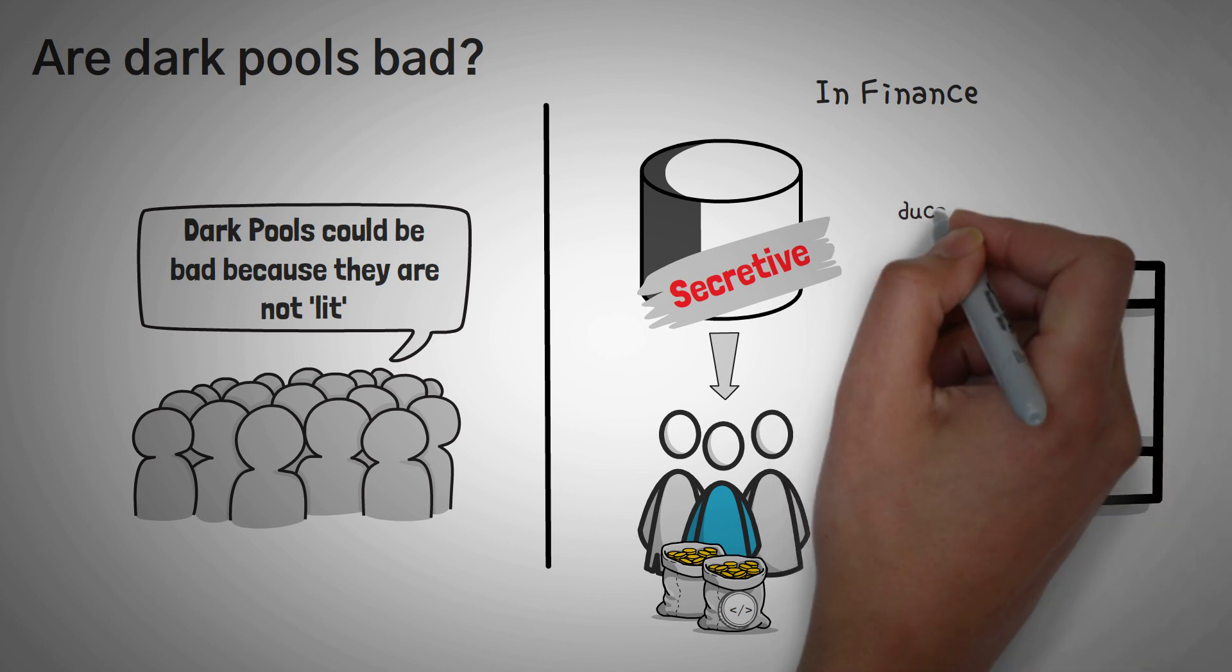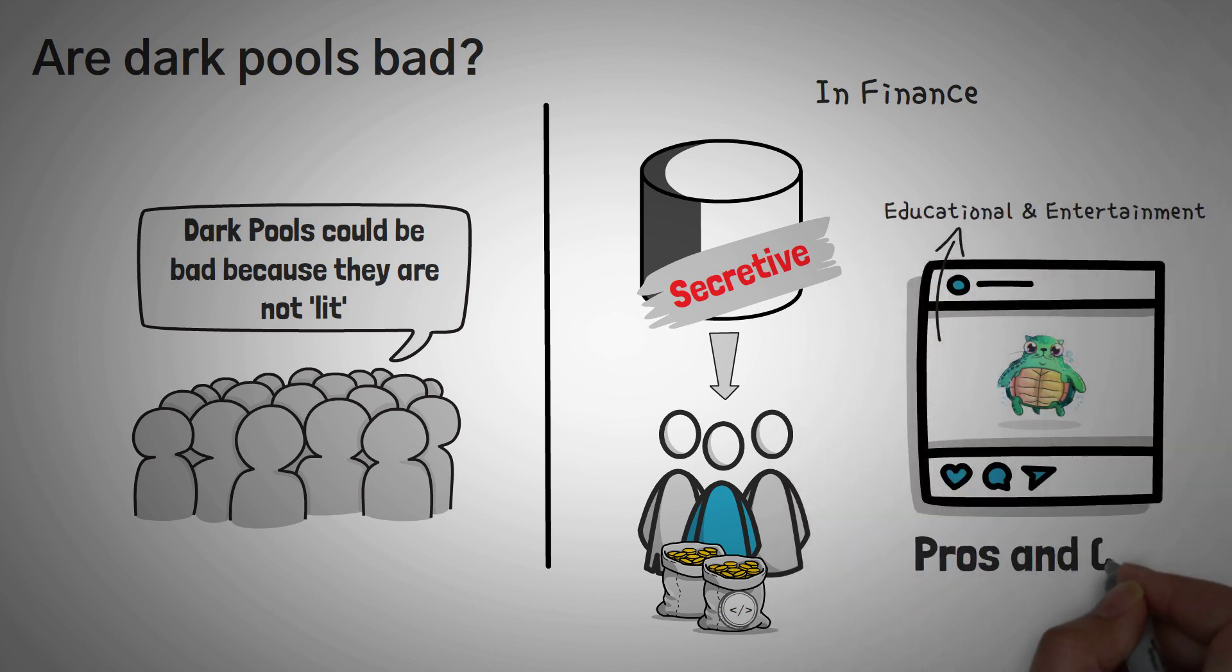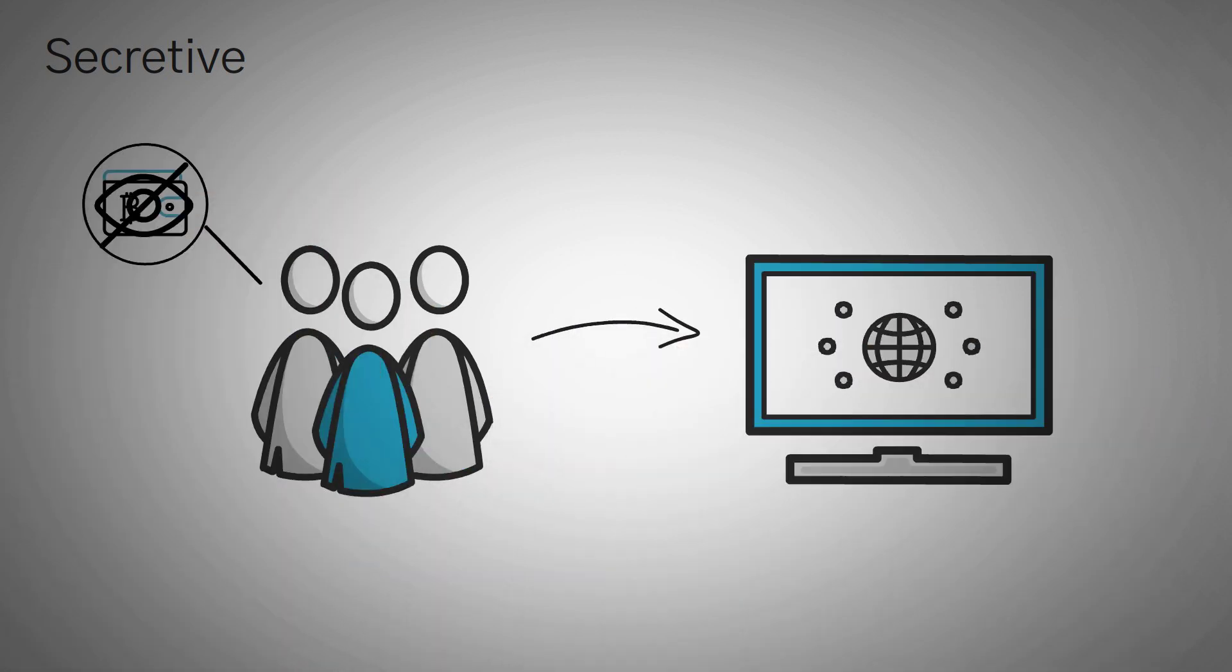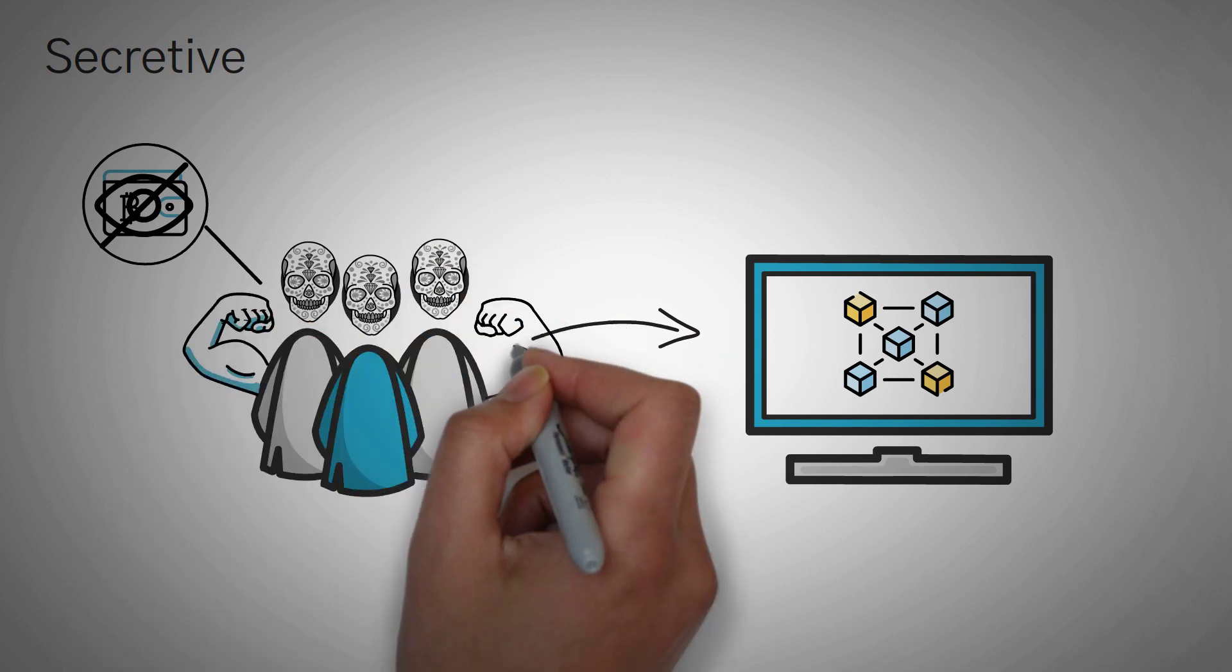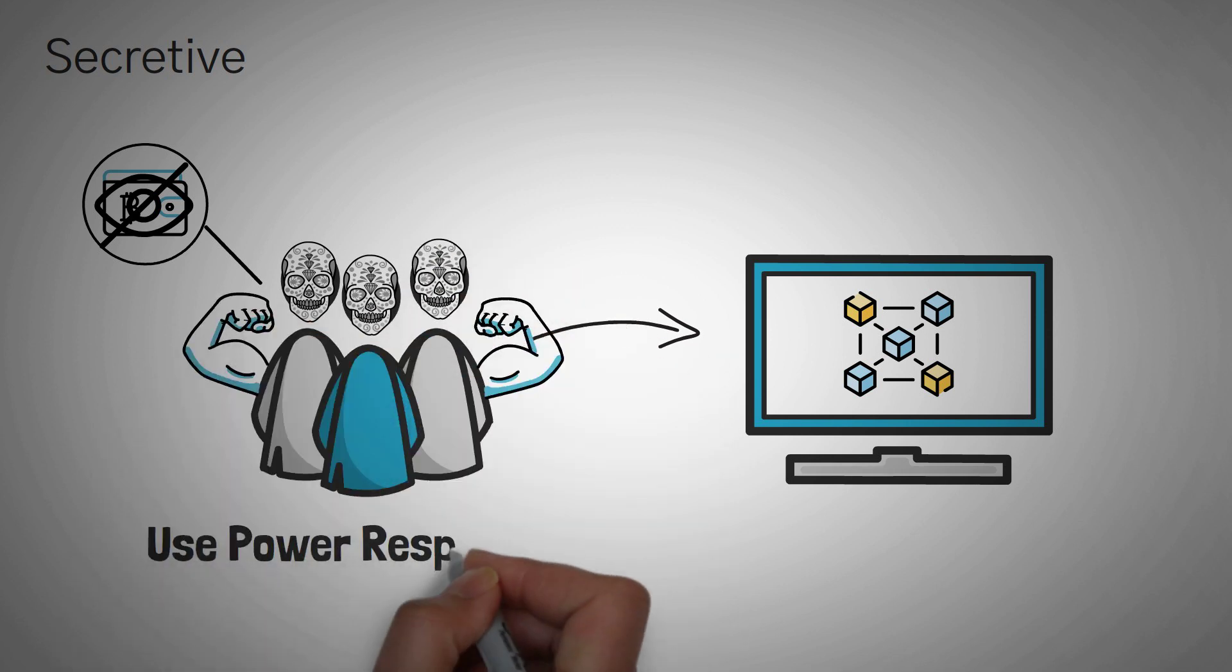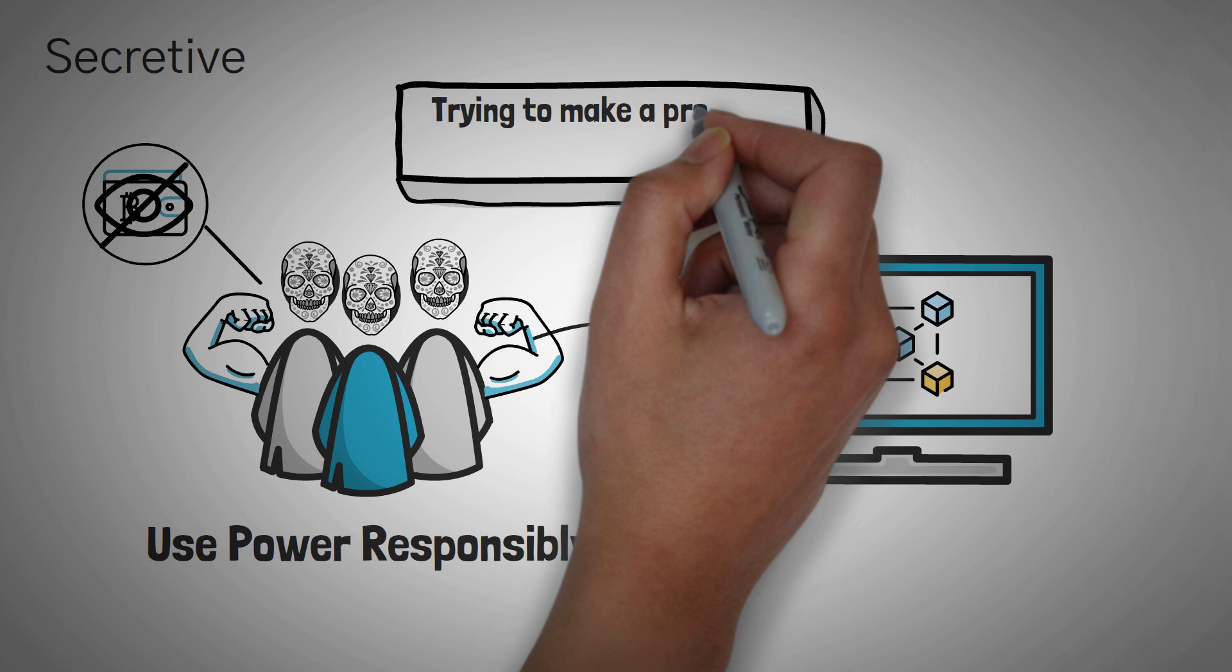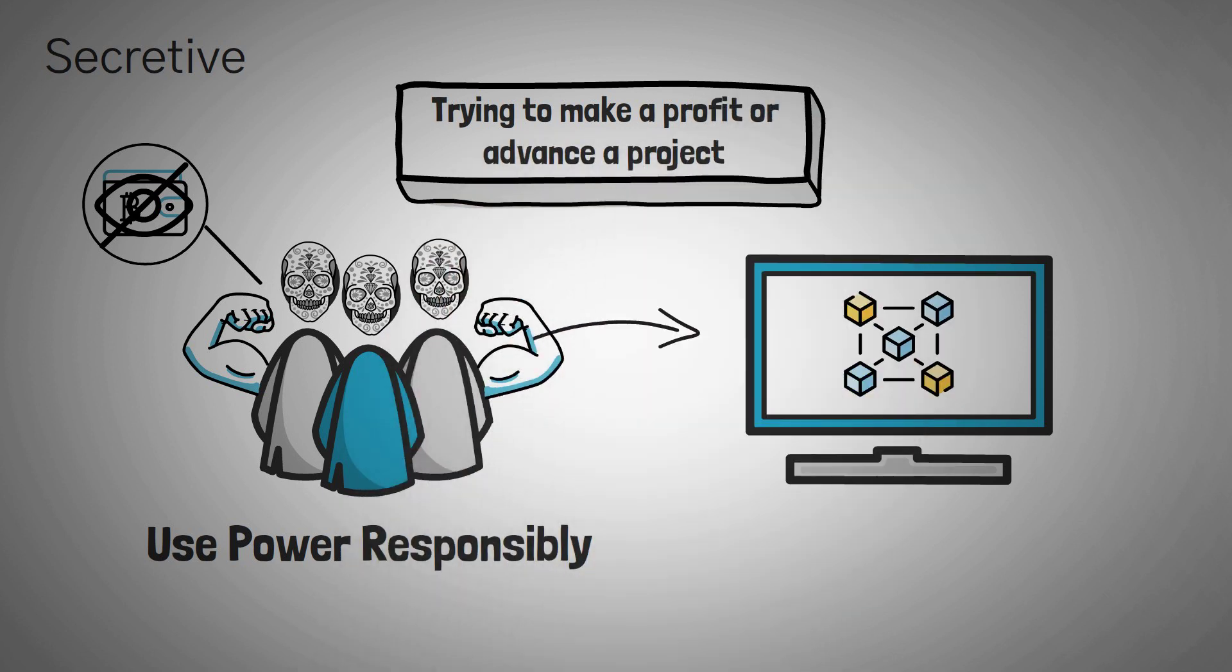However, we are an educational and entertainment channel, so we want to help you understand the pros and cons of them just a little bit more. One of the main issues that people have is that these investors are trying to be secretive with their money, which actually is one of the benefits of using a blockchain. You can stay anonymous. However, some people believe since whales have a lot of power, they should be careful with that power and use it responsibly. In the end, whales are simply investors like us, trying to make a profit or advance a project.